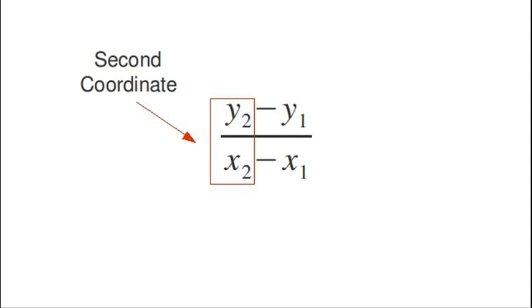And then we're going to subtract the other coordinates. Here outlined by the blue box we see y1 in the numerator and x1 in the denominator. These are the coordinates of the first point.